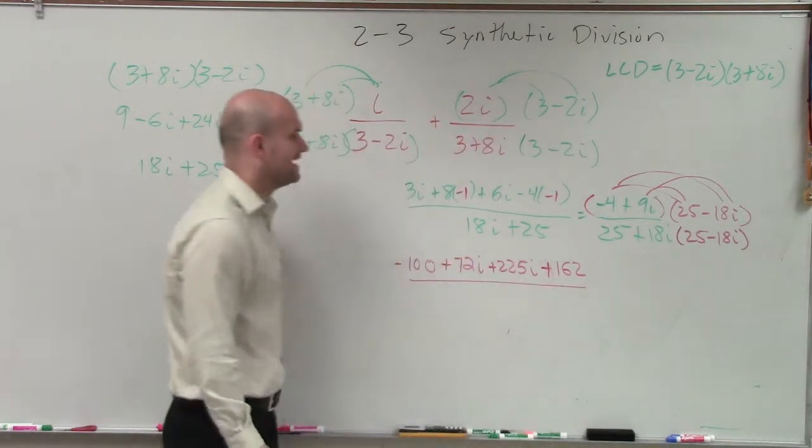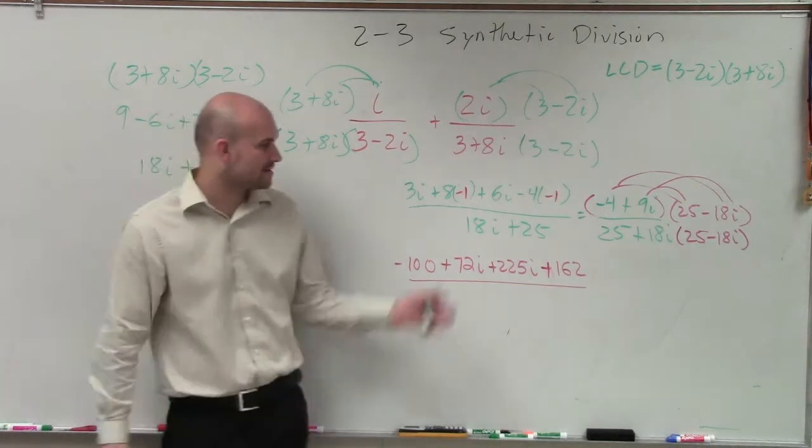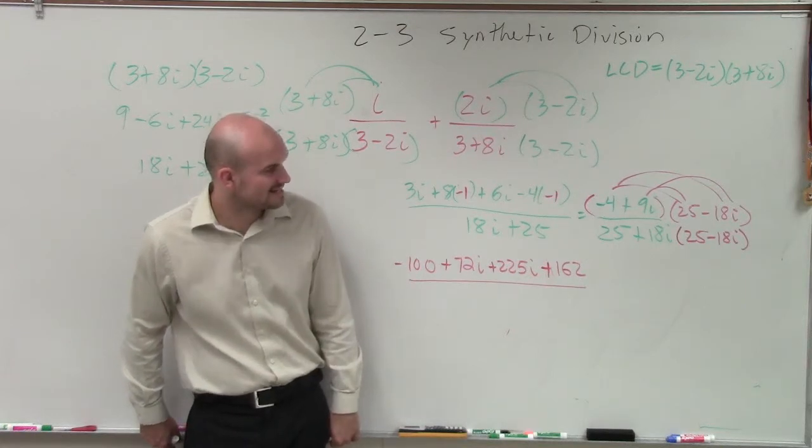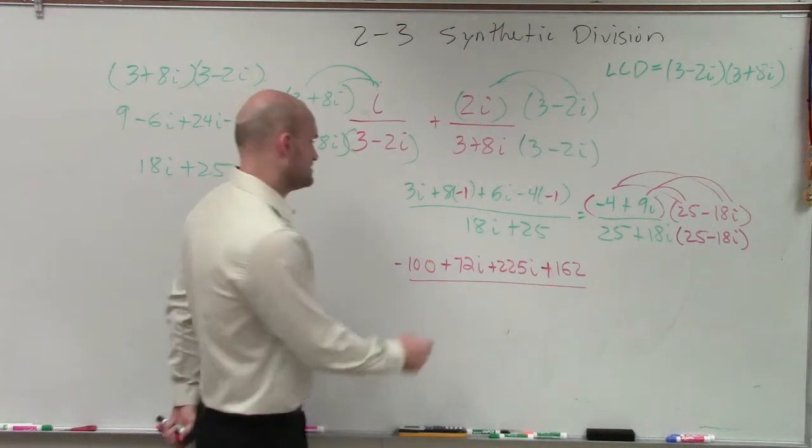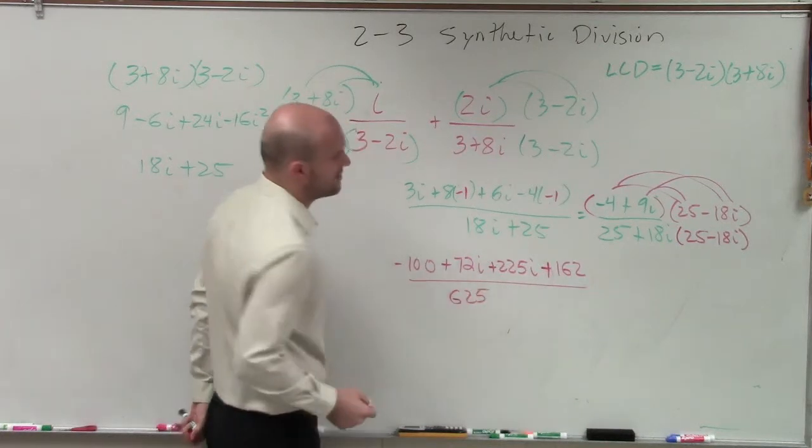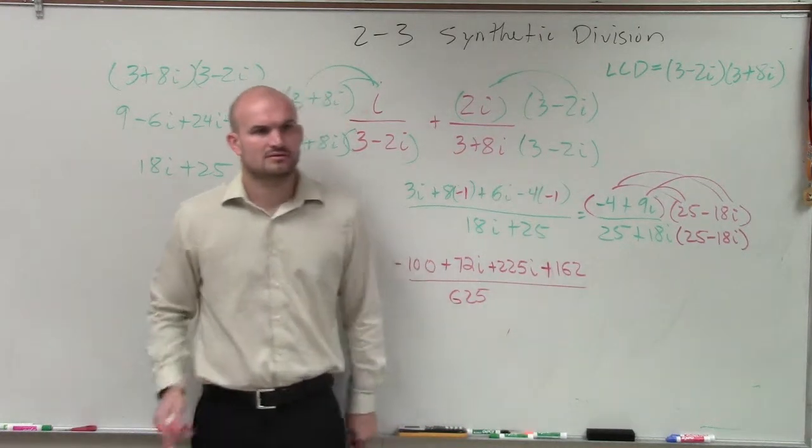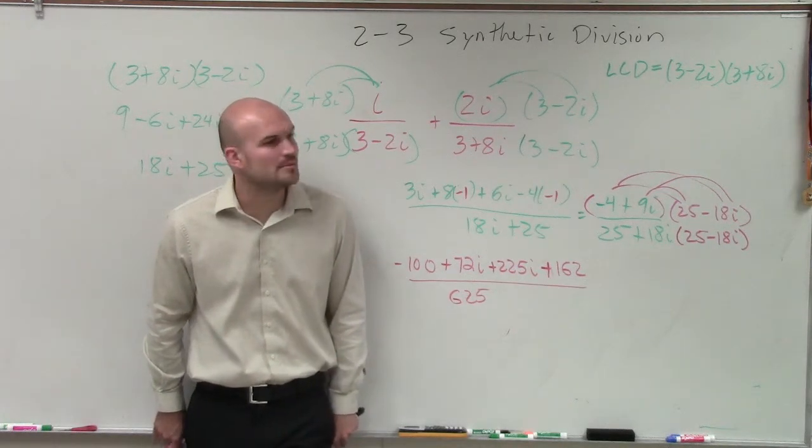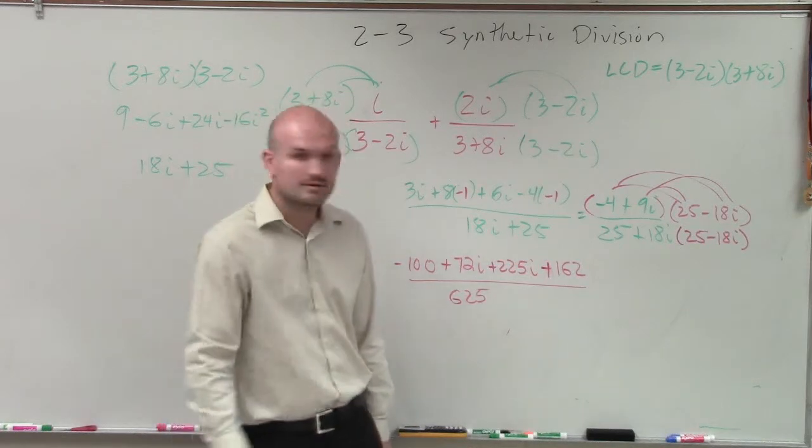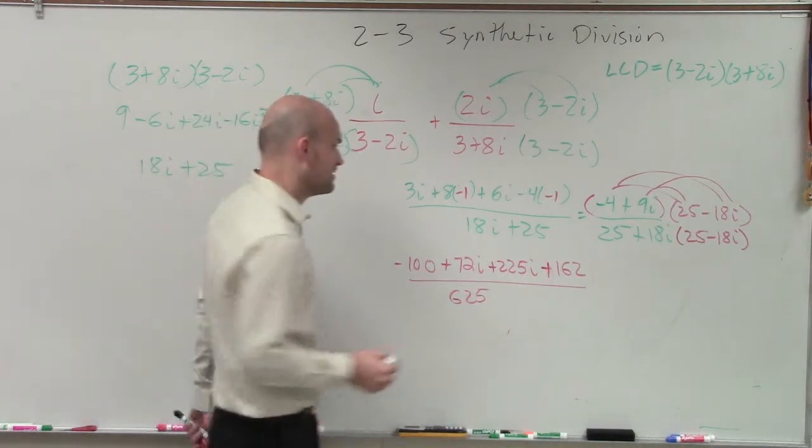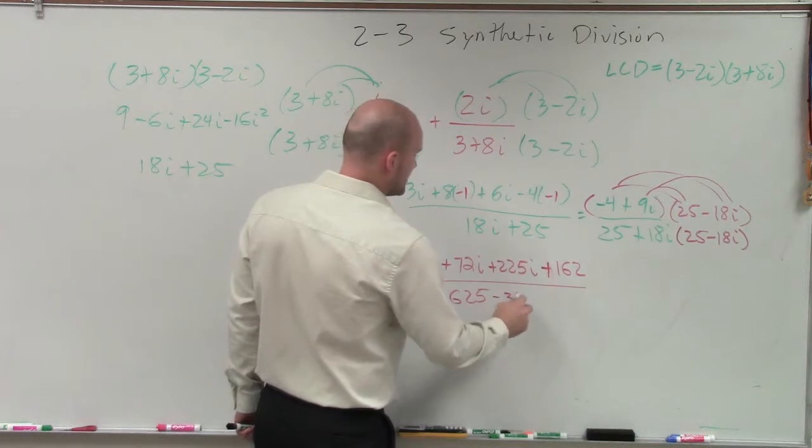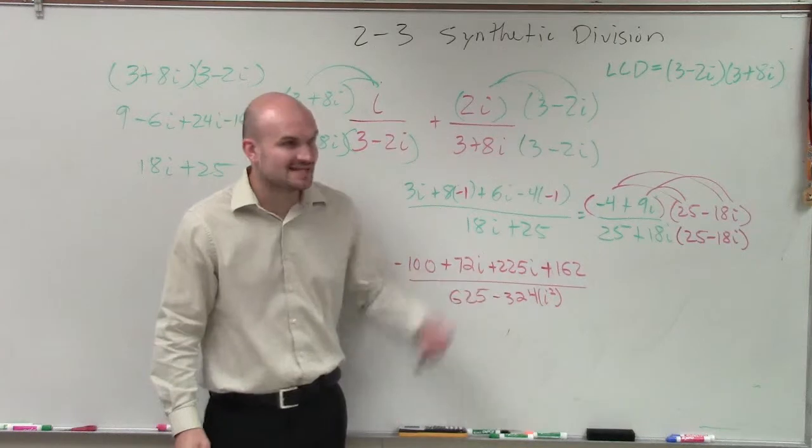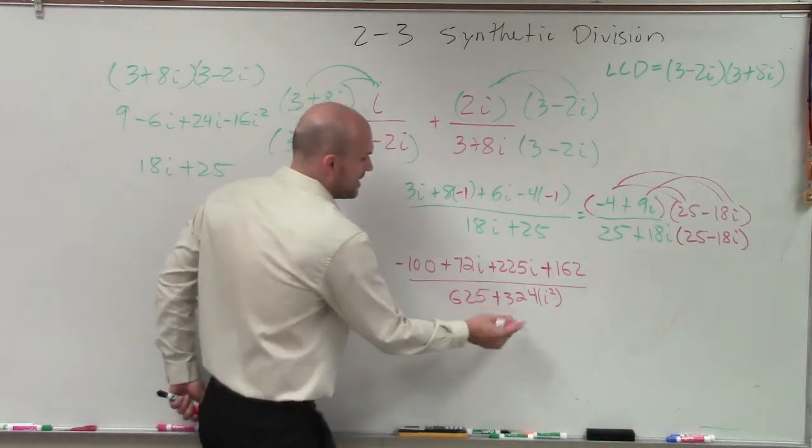Then on the bottom, we have 25 plus 18i times 25 minus 18i. So 25 times 25 is 625. And then 18 times 18 is 324i squared, so it's negative 324i squared. Well, i squared is negative 1, so then that just becomes positive.